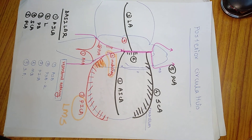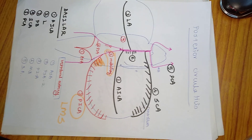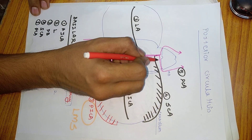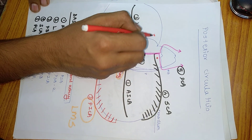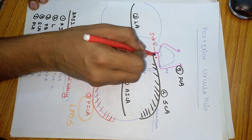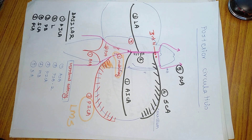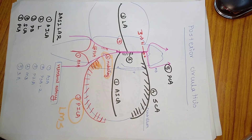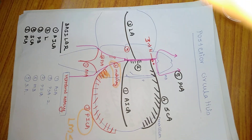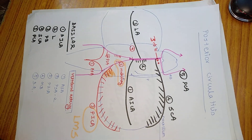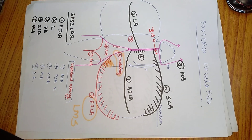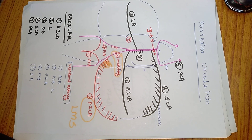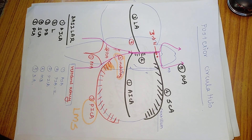Another important landmark: the third nerve comes over here. The third nerve is an important landmark between the posterior cerebral artery and the superior cerebellar artery, because an aneurysm of the posterior cerebral or superior cerebellar artery might compress the third nerve, and the patient might present with features of third nerve palsy. So that's all.